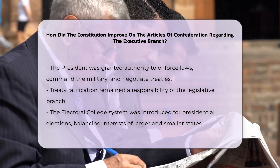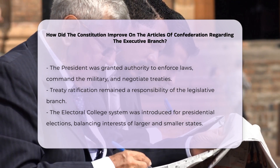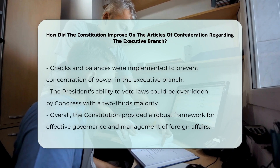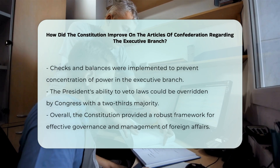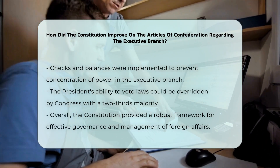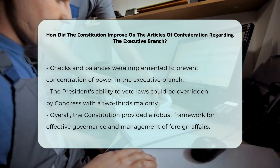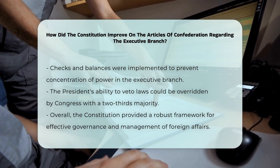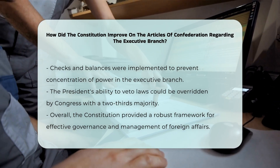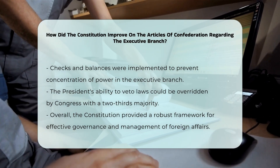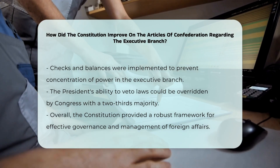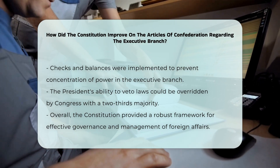The creation of the Executive Branch also included checks and balances to prevent the concentration of power. The President could veto laws, but Congress could override this veto with a two-thirds majority. This ensured that the Executive Branch remained accountable to both the people and Congress.